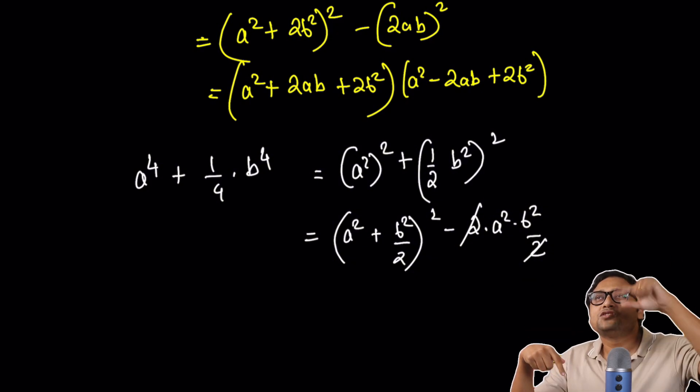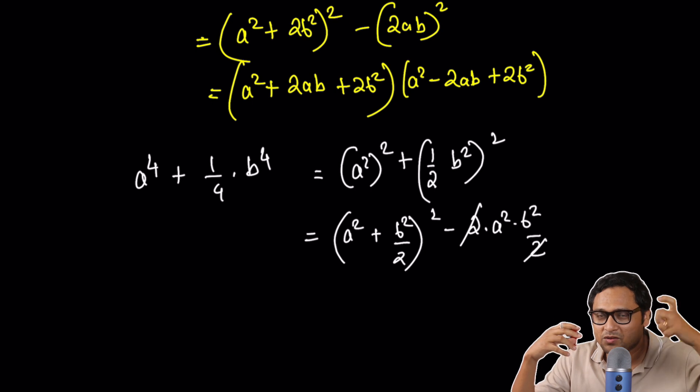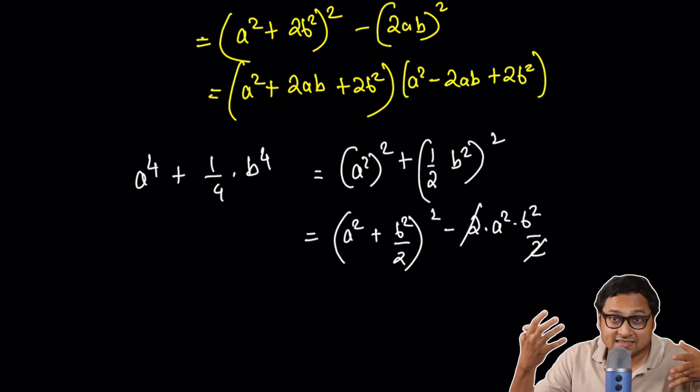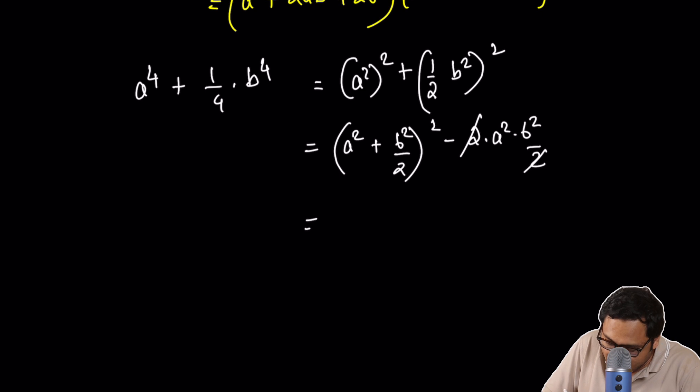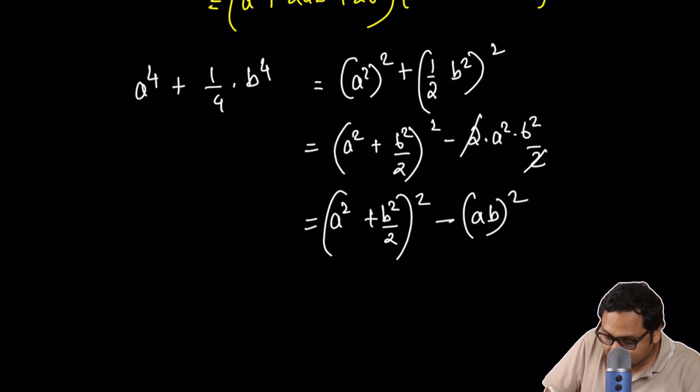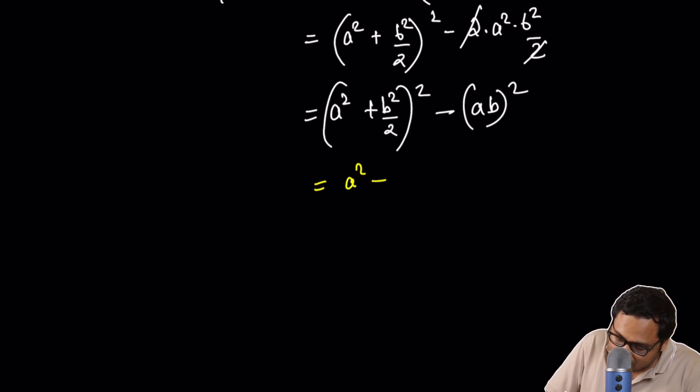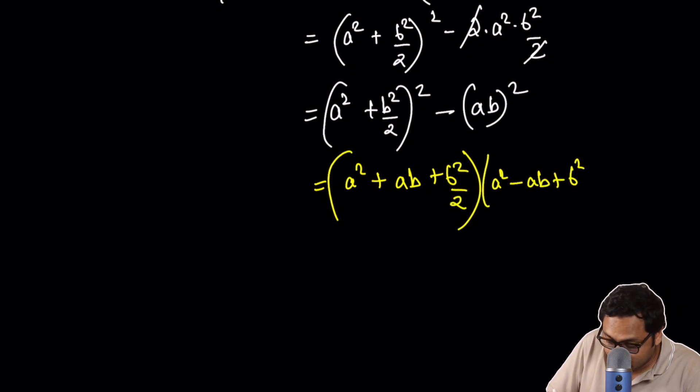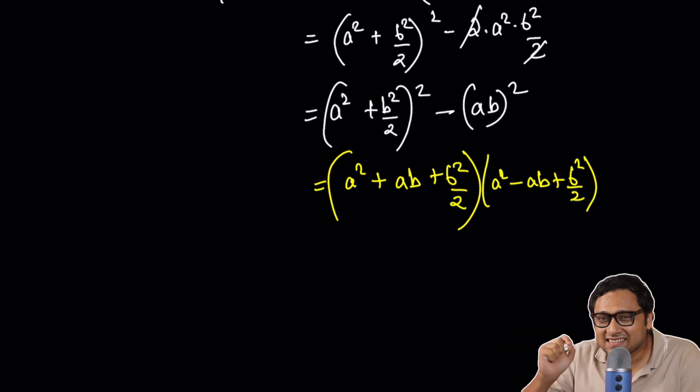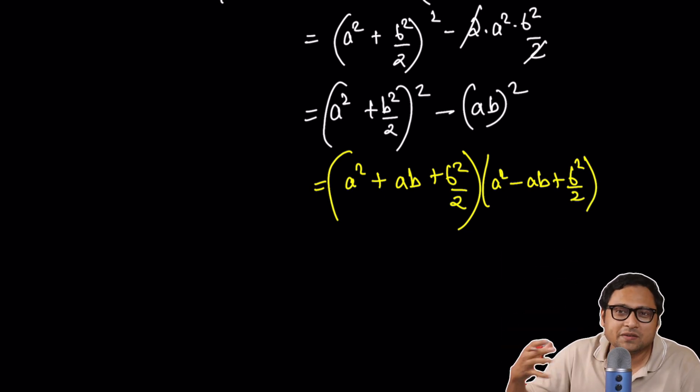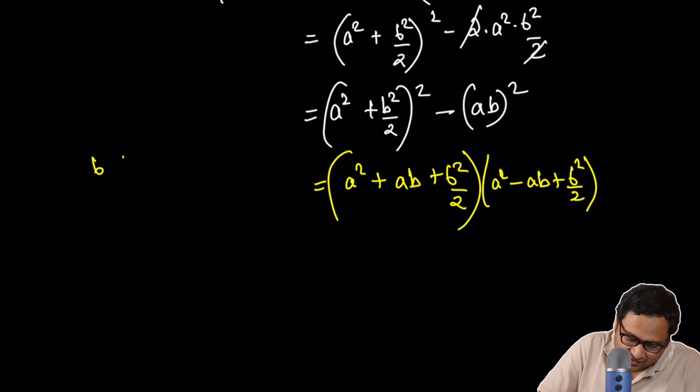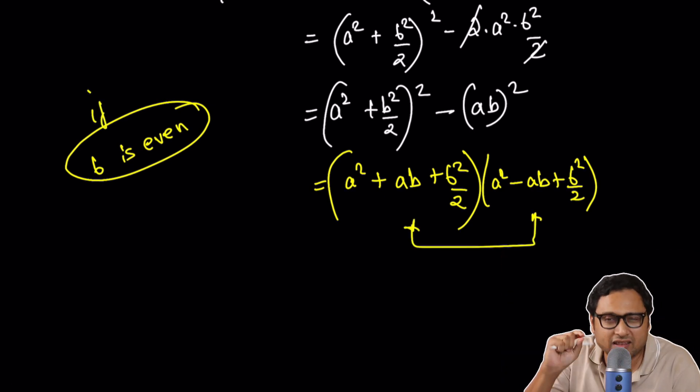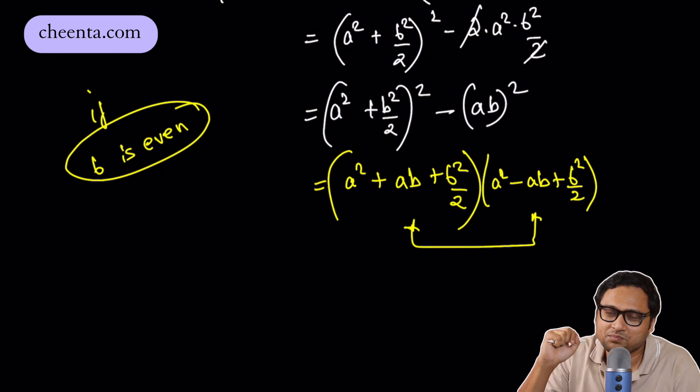You see what's happening, right? 2, 2, 2 cancels out. The first case, 2 and 2 got multiplied and gave me a 4 and so I could take the square of 2. Here 2 and 2 cancels. So similar things are happening. So we have a square plus b square by 2 whole square minus ab whole square. And finally, this factorizes at a square plus ab plus b square by 2, a square minus ab plus b square by 2. So there is a slight issue that can we think about b square by 2 as a number. So of course, if b is even, then we don't have a problem. So if b is even, then this is a good factorization. So to be a little careful there, but usually this works out.